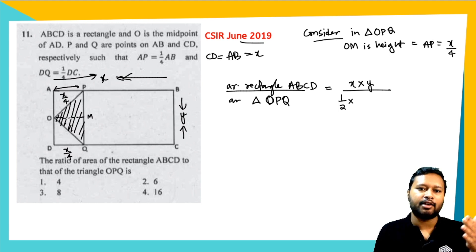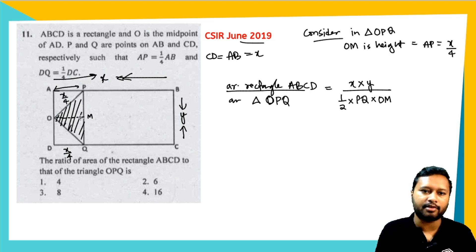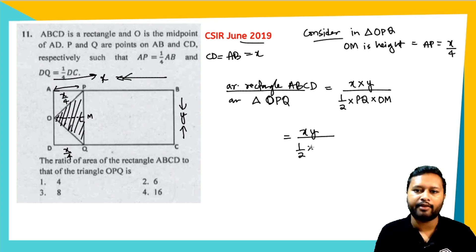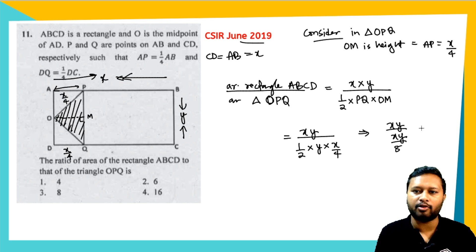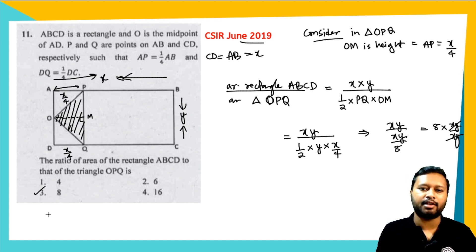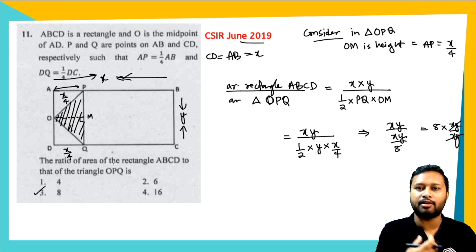So area of triangle OPQ = ½ × PQ × OM = ½ × y × (x/4) = xy/8. The ratio of rectangle to triangle is xy divided by xy/8, which equals 8. Very simple — you just have to identify the given information and use it to find what you need.